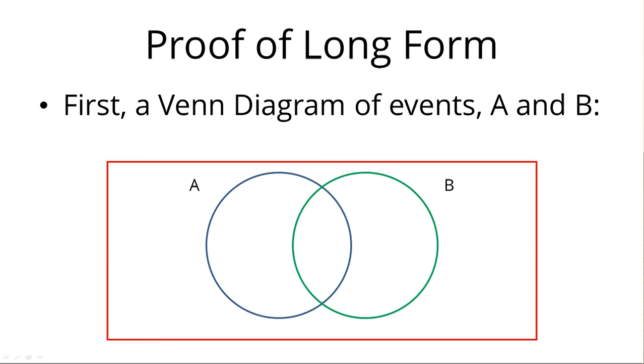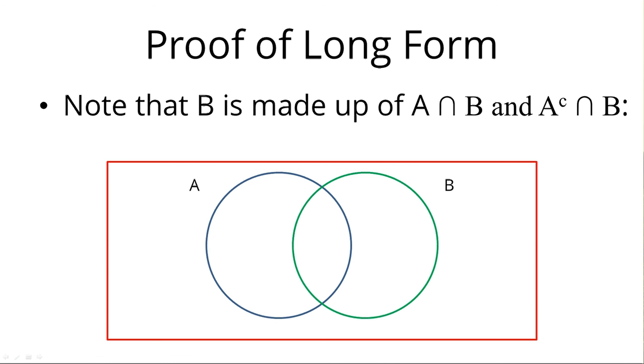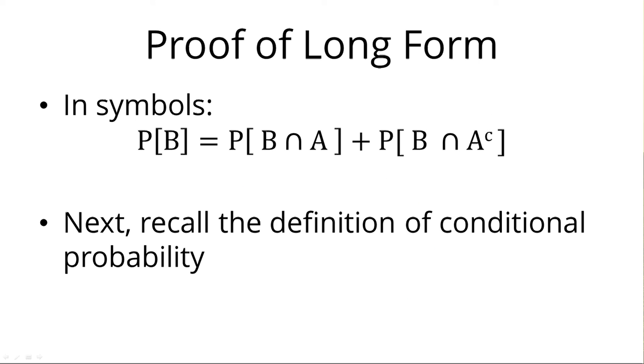So let's look at these two events, A and B. We can represent them in an event diagram. Event A is everything within the blue circle. Event B is everything within the green circle. Everything outside of the blue circle is event A complement. Notice that we can break B up into two parts. The part that it shares with A, and the part that it doesn't share with A. Well, the part that it doesn't share with A, is exactly the same as saying it's the part that it shares with A complement. So B is equal to A intersect B, plus A complement intersect B. In symbols, just throw a probability on that, and you've got the basis for the law of total probability.